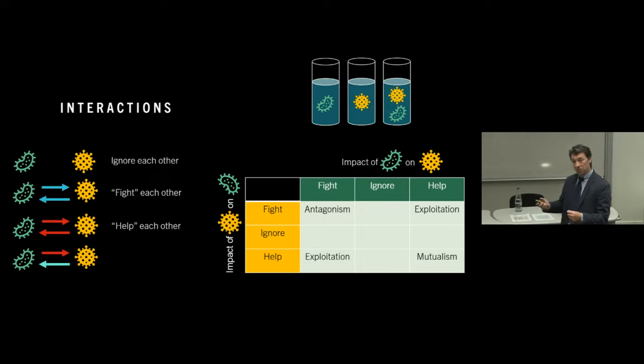And there are lots of different possible interactions. So they could, of course, ignore each other. We would know that they're ignoring each other by growing one of the species on its own, growing the other species on its own, and then putting them together and seeing what happens. And if when they're together, they grow in exactly the same way as when they're apart, then we know that they're ignoring each other. But typically what will happen is that they will not ignore each other. One thing that they can do is they can fight together. And they fight in a few different ways.